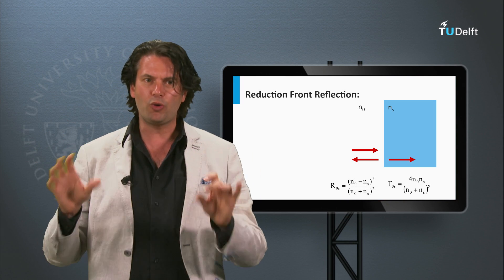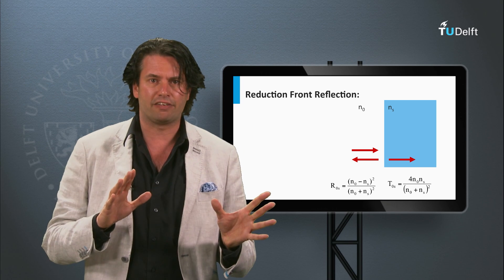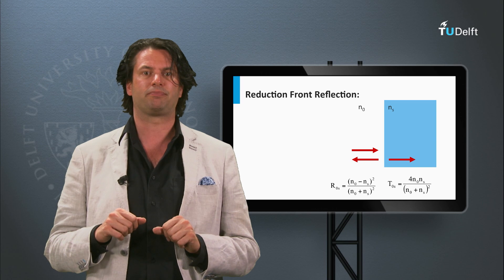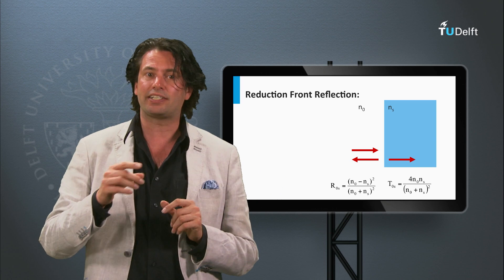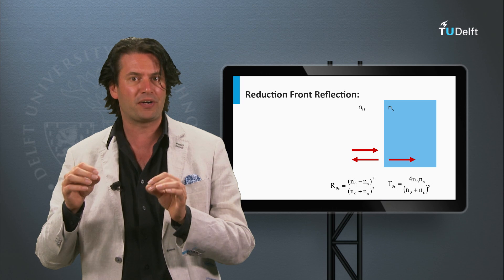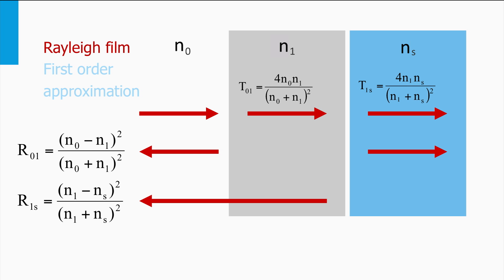Using these basics, we will look at the interface of silicon, the most common material used for solar cells. Consider an air-silicon interface, and for simplicity, light under perpendicular incidence at a wavelength of 500 nm. The refractive index of air is 1, and that of silicon is 4.3 at a wavelength of 500 nm. The Fresnel coefficient tells us that the optical losses due to reflection are significant at this interface — the reflection is 38.8%. Reduction of this reflection can be achieved by introducing an interlayer with a refractive index n1 with a value between that of n0 (air) and ns (silicon).